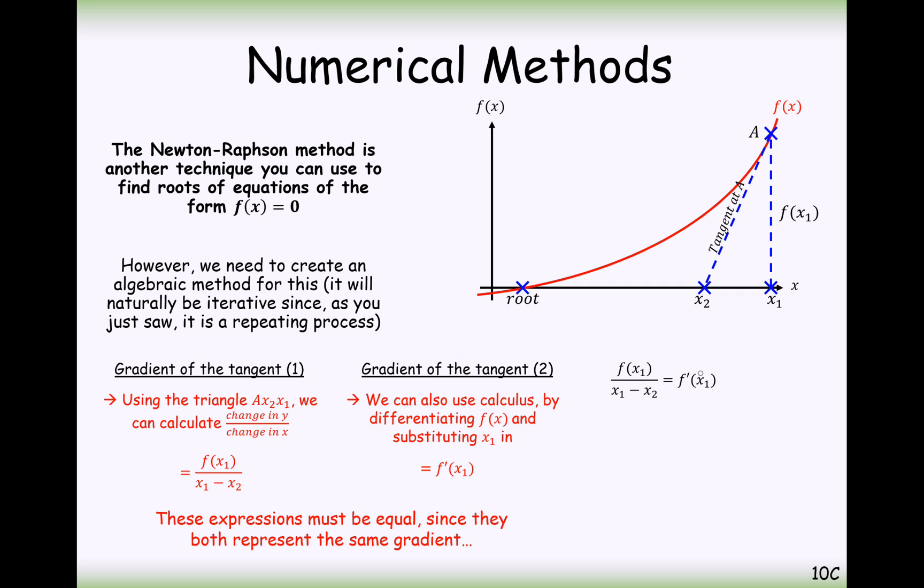So what we can now do is with this formula, the gradients should match up and be approximately the same. We're going to multiply by x₁ minus x₂ onto the other side, divide by f'(x₁) onto the other side. And what we're going to do then is we're going to just shift it around a little bit, add x₂ onto the left, minus this fraction onto the right. And this is what we get, this is the Newton-Raphson formula.